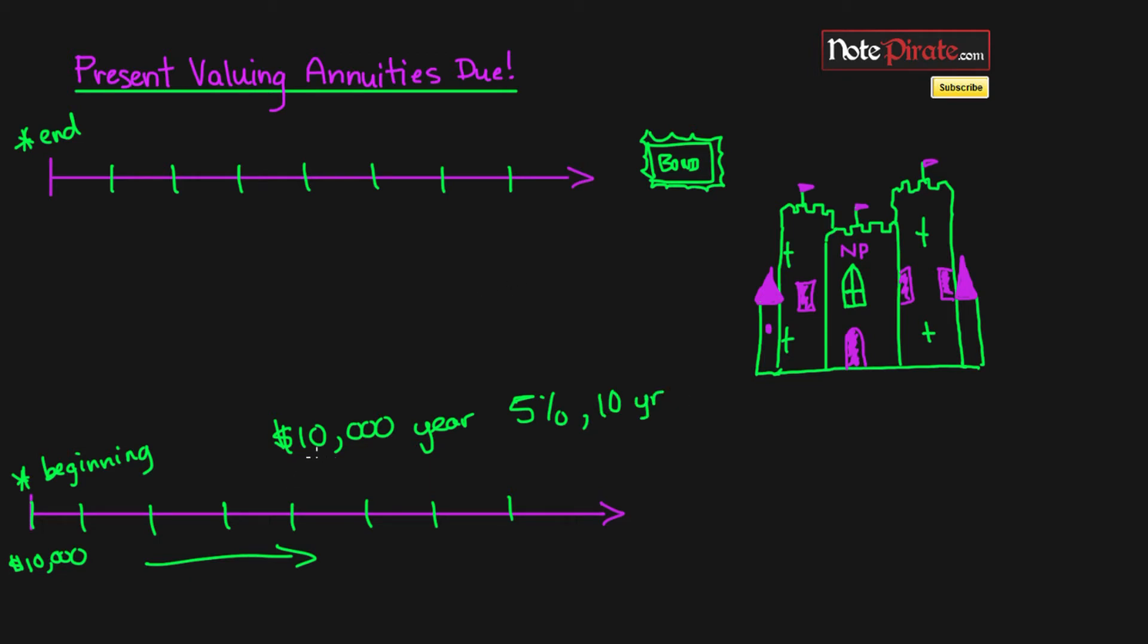We're gonna have ten thousand dollars each year for let's say a ten-year period. Now if we have to calculate the present value of this, how would we do this? If you were to look at both of these, they look very similar.